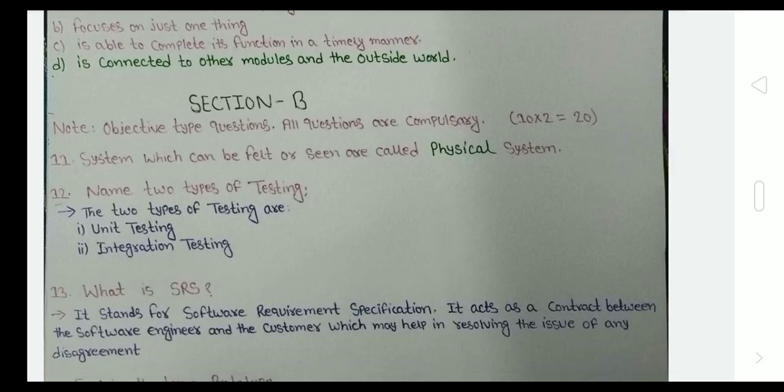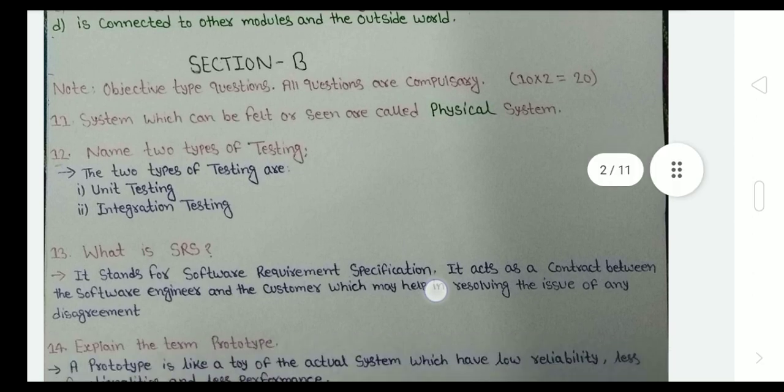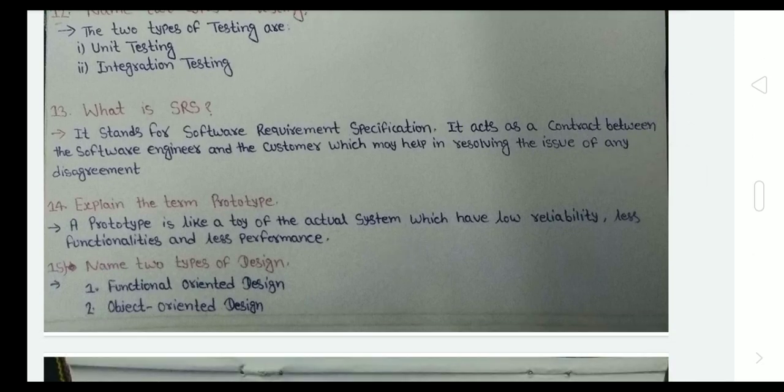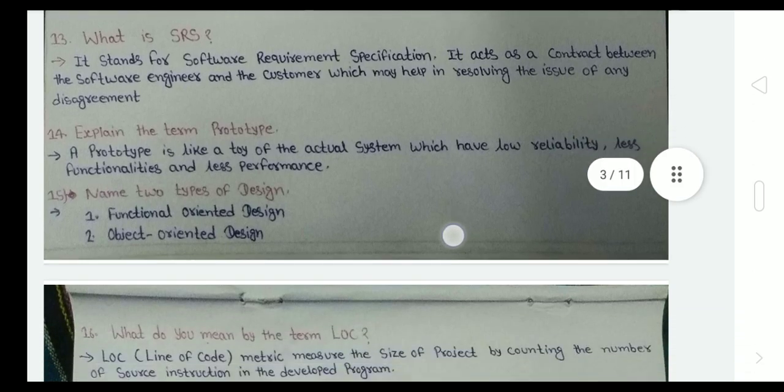Now we come to Section B, which is objective type questions containing two marks. Name two types of testing: unit testing and integration testing. What is SRS? SRS stands for Software Requirement Specification, and it is basically a contract between the software engineer and the end user or customer. Explain the term prototype: prototype is like a toy of the actual system which has low reliability, less functionality, and less performance.